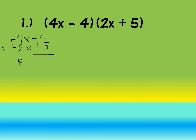Next, multiply 2x by negative 4: negative 4 times 2 gives us negative 8, copy variable x. Then multiply 5 by 4x: 5 times 4 gives us positive 20, copy variable x. Finally, multiply negative 4 by positive 5: negative times positive gives us negative 20.